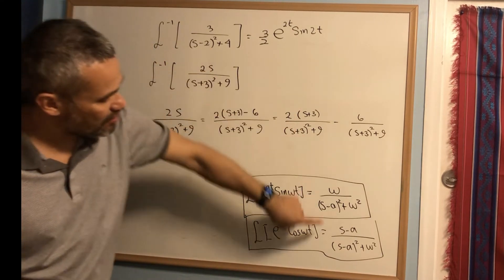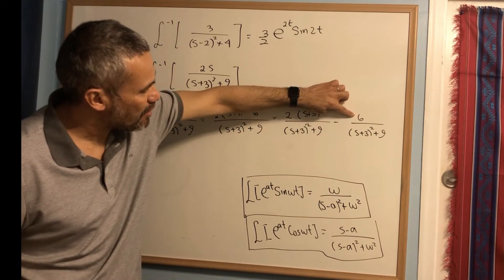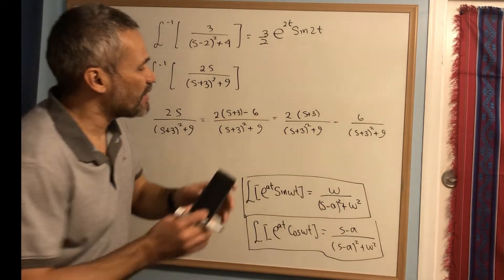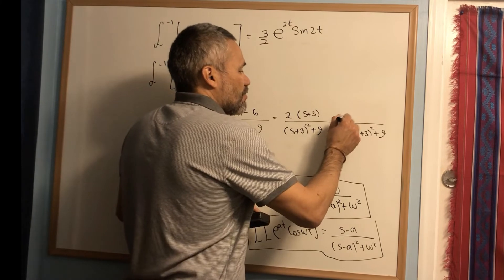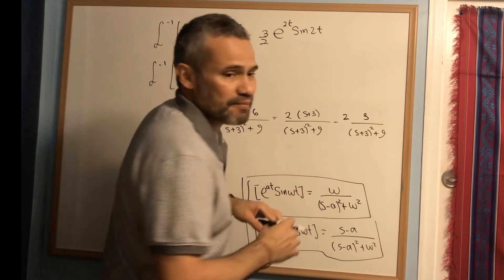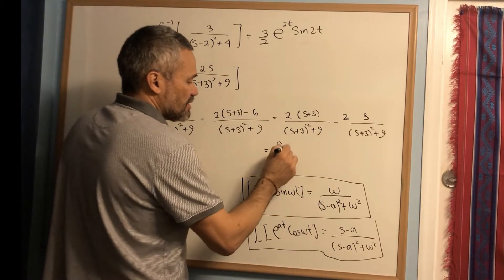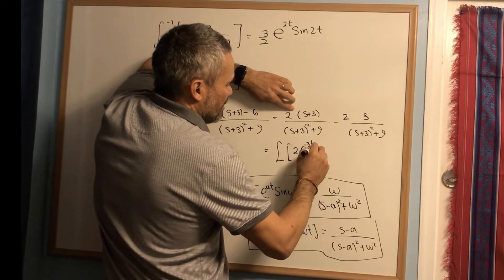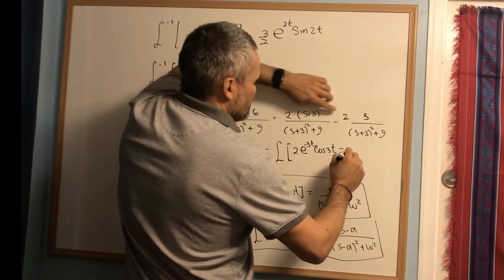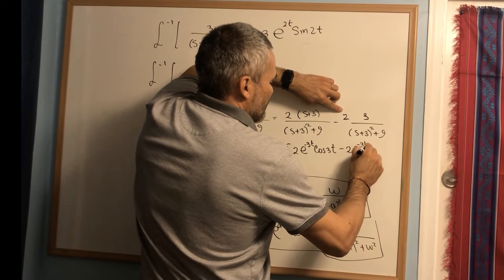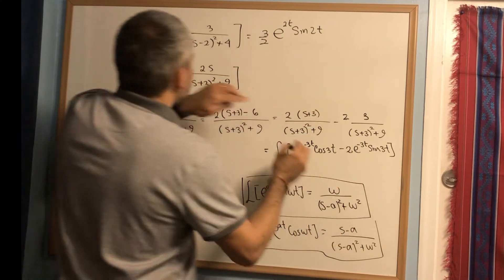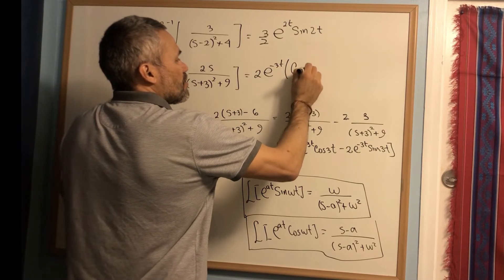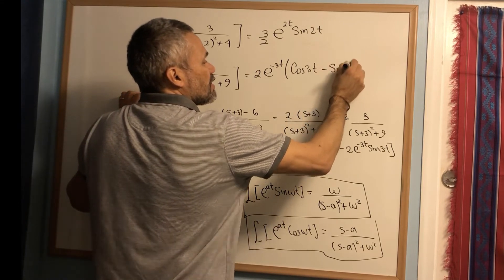Since ω = 3, we need a 3 in the numerator of the sine term. Rewriting 6 as 2×3, the second term becomes 2 times 3 over (s+3)(s²+9). This means the first part is the Laplace transform of e^(-3t) cos(3t) and the second part gives 2e^(-3t) sin(3t). The answer is 2e^(-3t)(cos(3t) − sin(3t)).